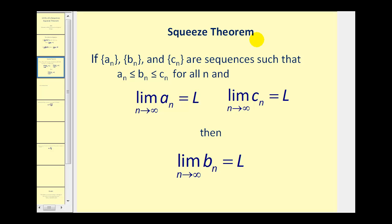This is what the squeeze theorem says. If we have three sequences — sequence a, b, and c — where sequence b is always greater than or equal to sequence a, and also less than or equal to sequence c for all n, and if the limit of a sub n as n approaches infinity equals L, as well as the limit of c sub n as n approaches infinity, then we can conclude by the squeeze theorem that the limit of b sub n as n approaches infinity is also equal to L. So if we can define two sequences where sequence b will always be between the two, finding the limit of those two sandwiching sequences will also tell us the limit of sequence b.